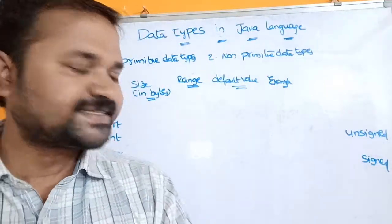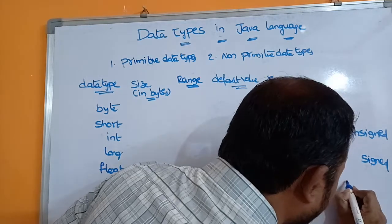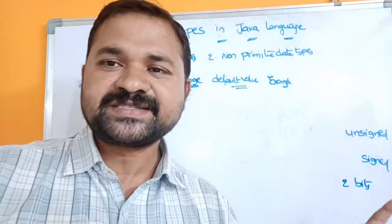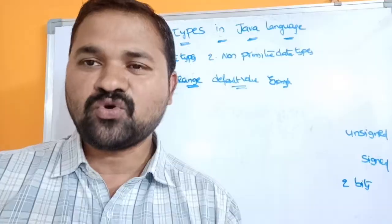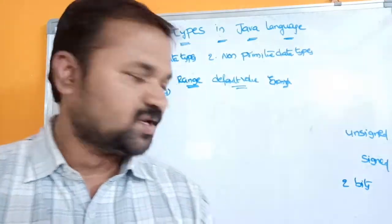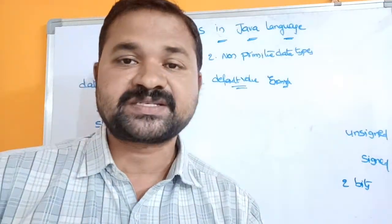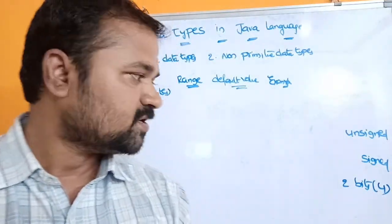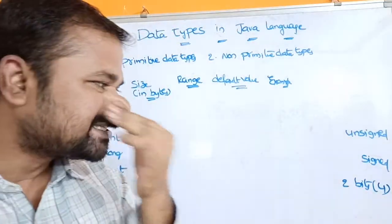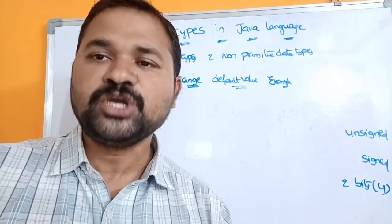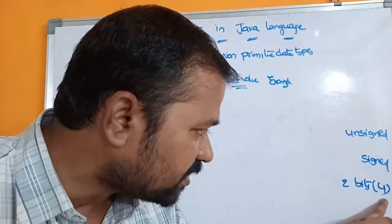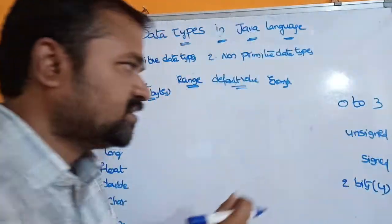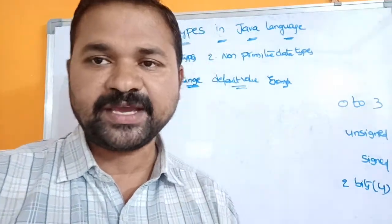Let us calculate the range of unsigned and signed. Suppose we have two bits of data. In two bits, the bit may be either zero or one, so we can get four combinations: 00, 01, 10, 11. If there are two bits, we can store 2 power 2 = 4 numbers. For unsigned, the minimum positive number is zero and the maximum is three — so the range is 0 to 3.